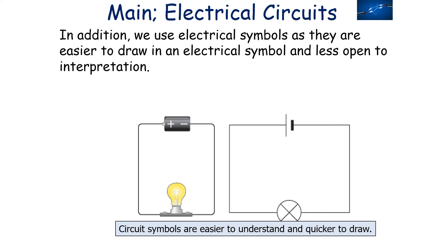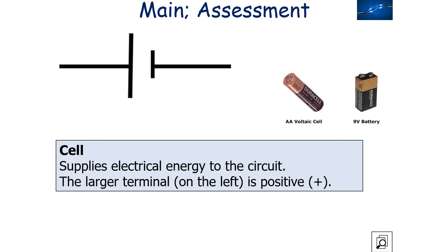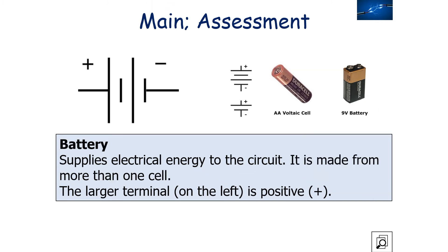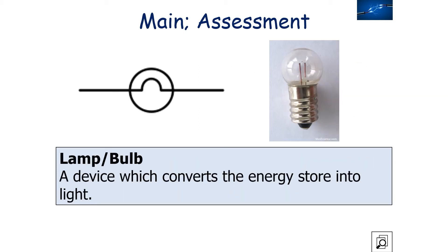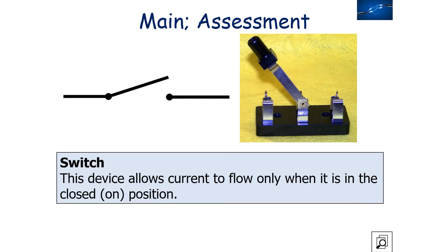The first symbol is a cell, which supplies electrical energy to the circuit — the larger terminal on the left is the positive one. A battery also supplies electrical energy and is made from more than one cell; again the larger terminal is the positive terminal. A lamp or bulb is a device which converts the energy store of the circuit into light. A switch allows current to flow only when it's in the closed or on position, completing the circuit.